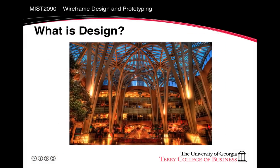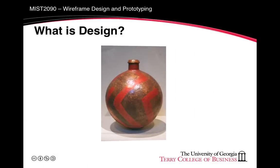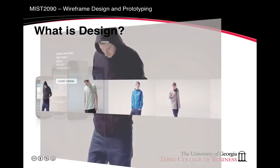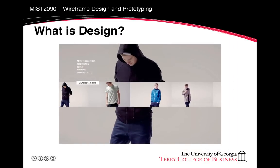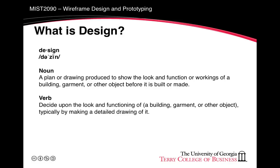What is design? You can design many things. Some of the things people think of when you say design include an article of clothing by a fashion designer, architecture of a building, or a consumer product. Design can be defined as a noun — a plan or a drawing produced to show the look and function or workings of a building, garment, or other object before it is built or made. Or as a verb — to decide upon the look and functioning of a building, garment, or other object, typically by making a detailed drawing of it. With this definition, we're speaking of the models of our design.